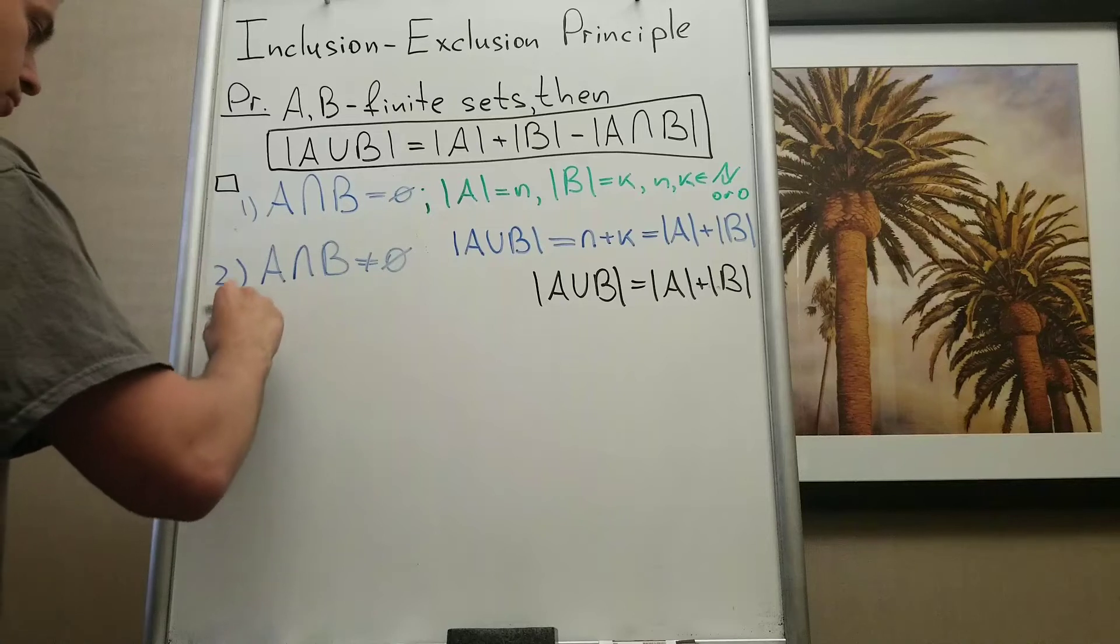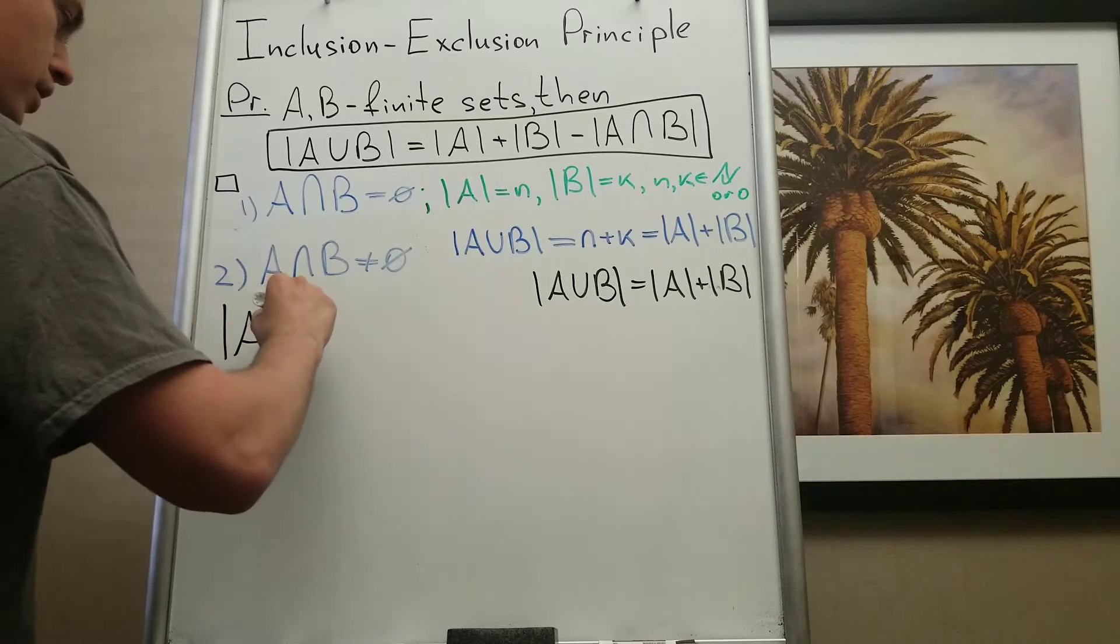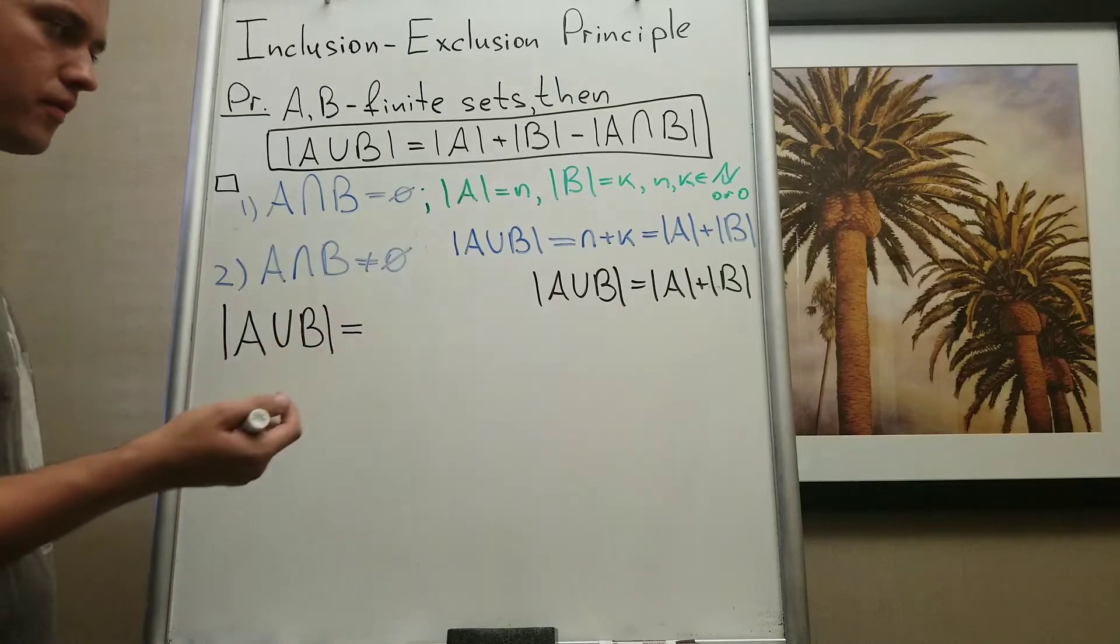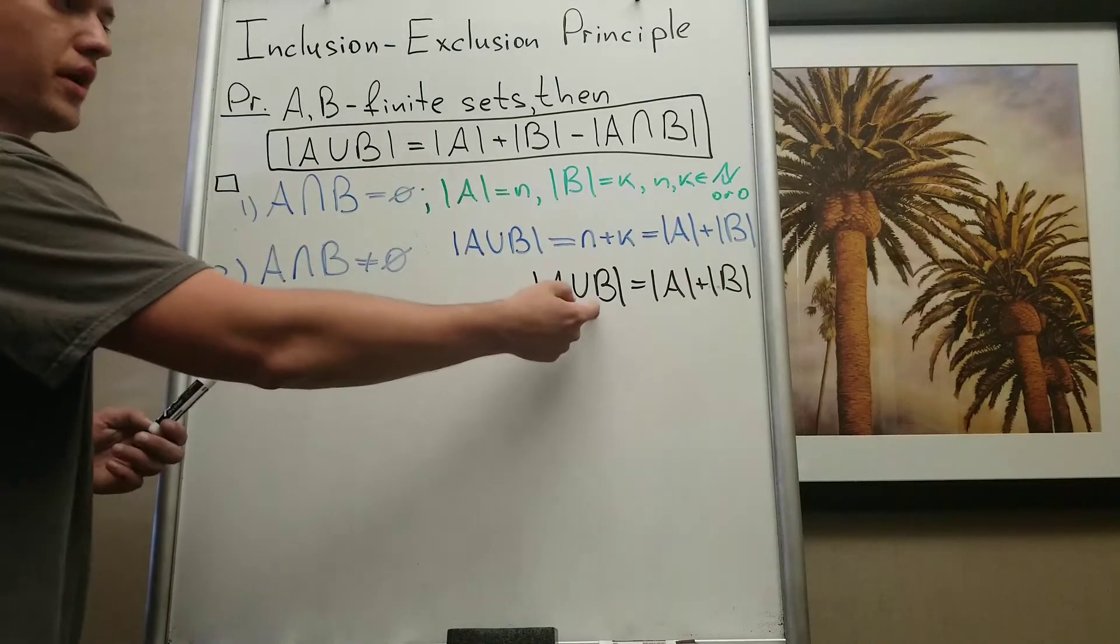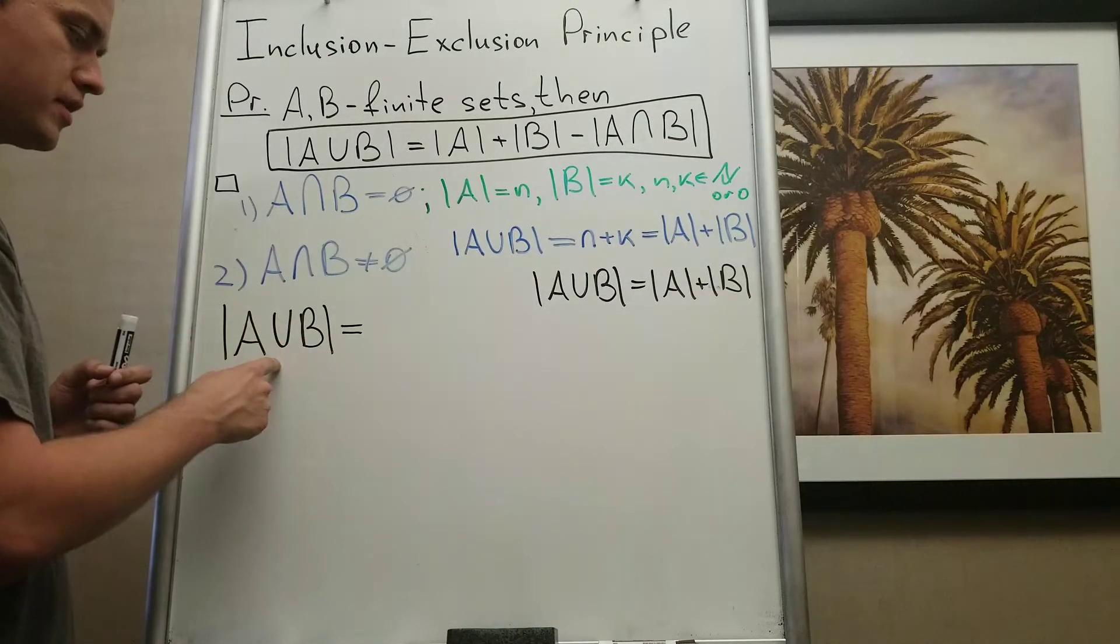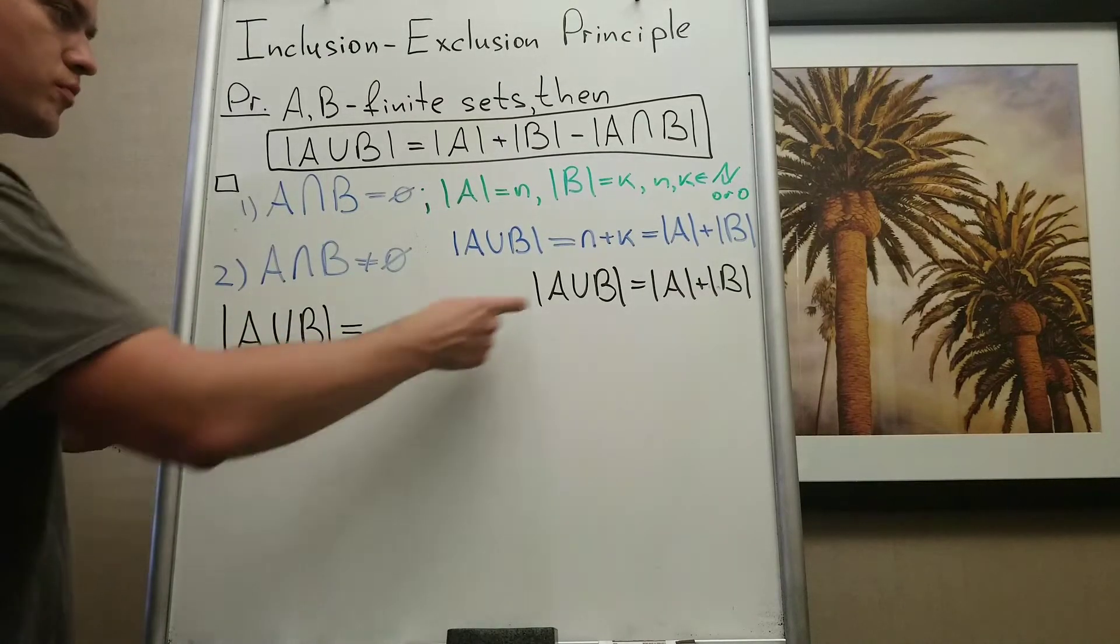So what I'm going to do, I'm going to write A union B. And how it works in math? First, I solve the simpler case. Then I'm taking an extended version of the simpler case. And I want to use my simpler case to solve this little bit extended version.